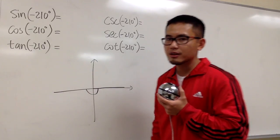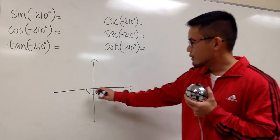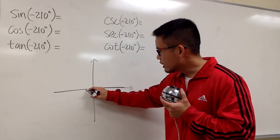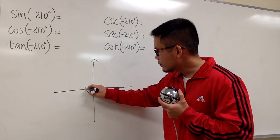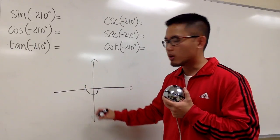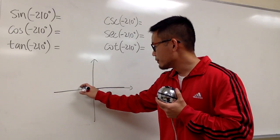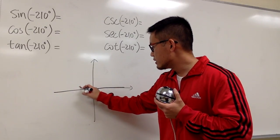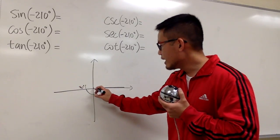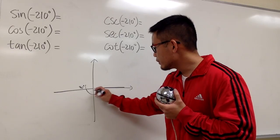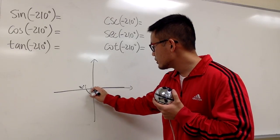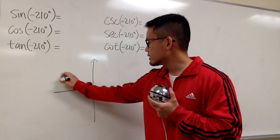We're almost there. We just need 30 degrees more backwards, so we're just going to turn from here to here, 30 degrees more. So this is the 30 degrees. And now I can draw the terminal side for you from the origin like that.